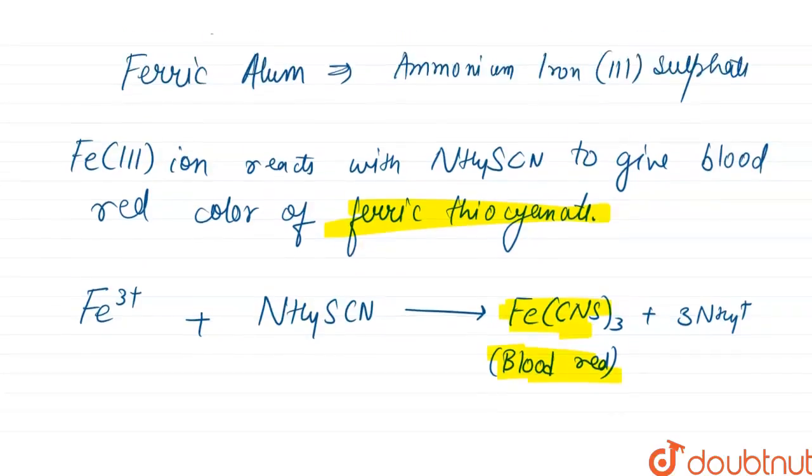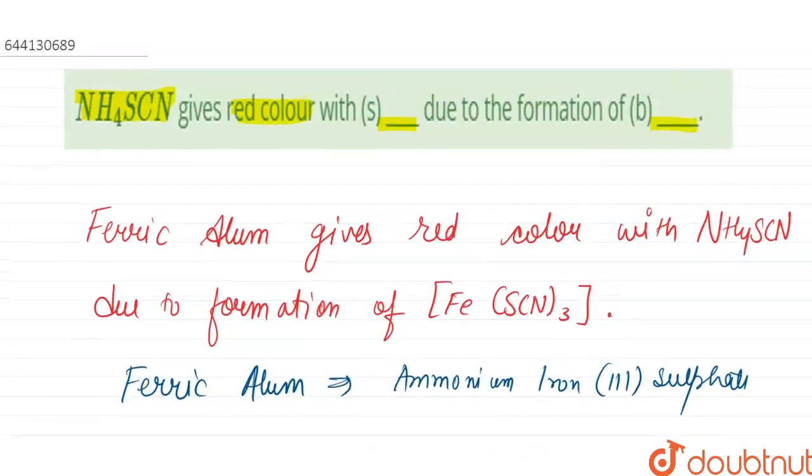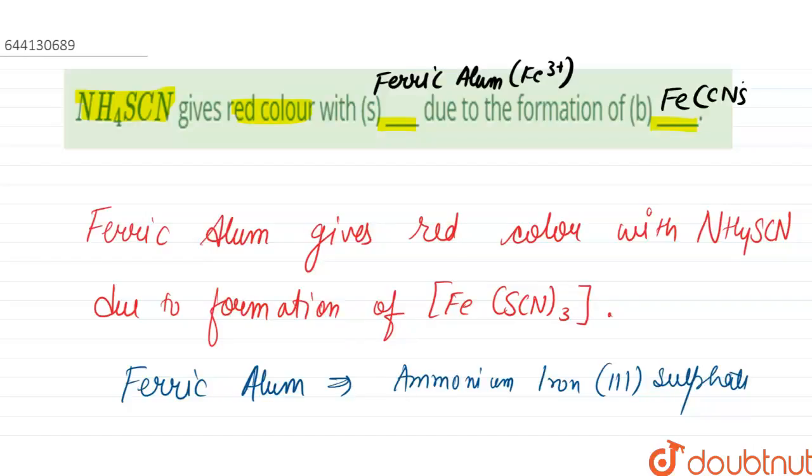So let us fill the blanks now. NH4SCN gives red color with ferric alum, that is, with Fe3+ ions, due to the formation of ferric thiocyanate, Fe(CNS)3. Thank you.